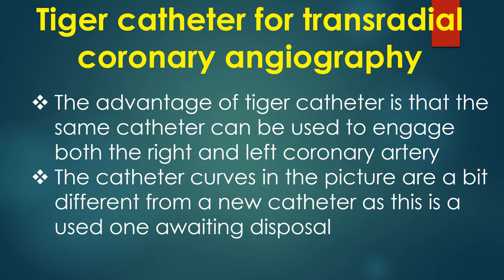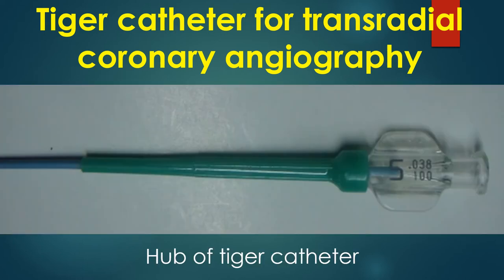The advantage of the TIGER catheter is that the same catheter can be used to engage both the right and left coronary arteries. The catheter curves in the picture look a bit different from a new catheter as this is a used one awaiting disposal. The hub of the TIGER catheter shows the size 5F, the maximum guide wire size of 0.38, and the catheter length of 100 cm.